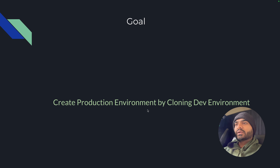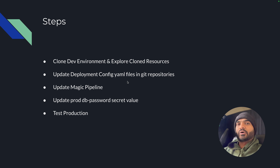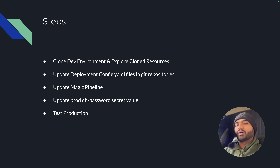The goal is to create a production environment by cloning the dev environment. The steps to accomplish this are: clone the dev environment, explore the resources created by the clone operation, update the deployment config.yaml files in the Git repositories to create separate configuration for dev and production environments, update the magic pipeline so GitLab workflow jobs can deploy the microservices to the new production environment, update the database password in the secret, and finally test the microservices after they are deployed to production.